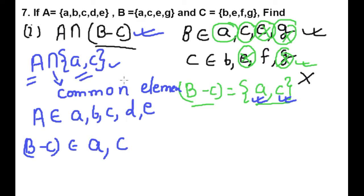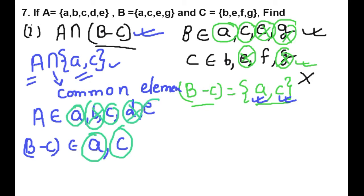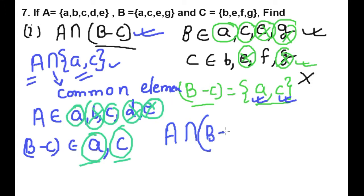Now we will find the common elements. A — common, yes. B — no. C — yes. D — no. E — no. So the common elements are A and C. Therefore, A intersection (B minus C) equals {A, C}. This is our answer.